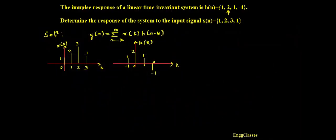The impulse response of a linear time invariant system is h of n, which is given as {1, 2, 1, -1}. Determine the response of the system to the input signal x of n, which is given as {1, 2, 3, 1}. The task is to find y of n, which is nothing but the convolution sum. For this we have the formula: y of n equals summation from k equals minus infinity to infinity of x of k times h of n minus k.